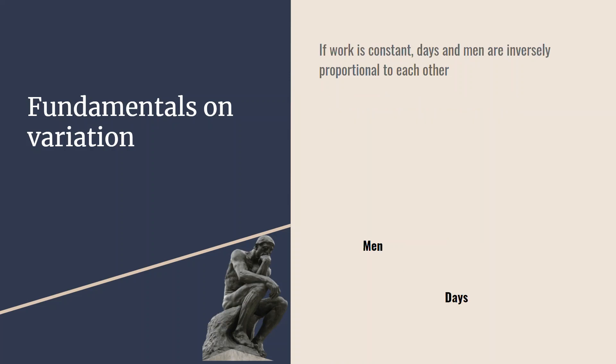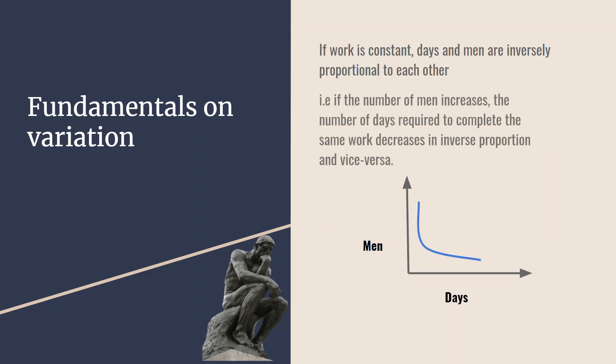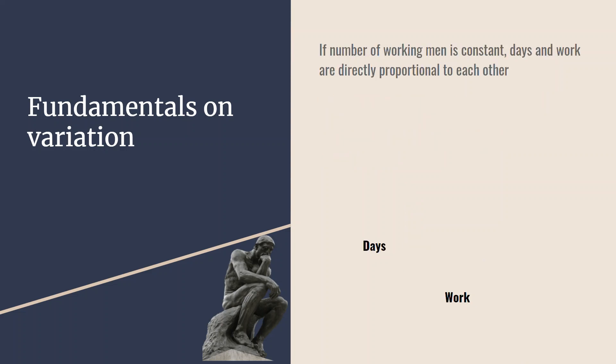If work is constant, days and men are inversely proportional to each other. That is, if the number of men increases, the number of days required to complete the same work decreases in inverse proportion, and vice versa.